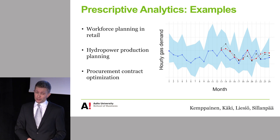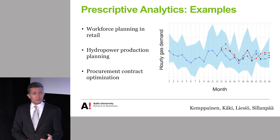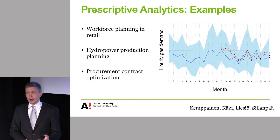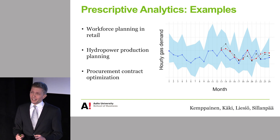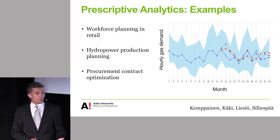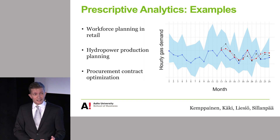The final example is from a pulp and paper company that uses natural gas to run its operations. The variation in how much gas they need per hour is quite large. You can hedge against this variation by using procurement contracts, but finding the optimal mix of different contracts and optimal quantities is not really possible without the use of stochastic optimization.